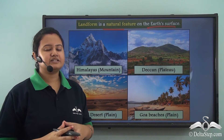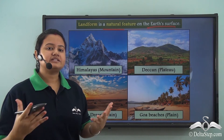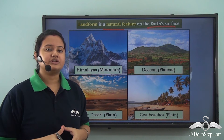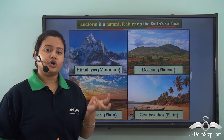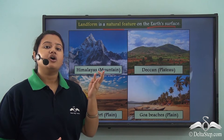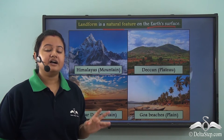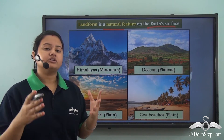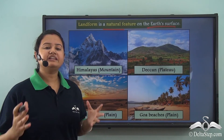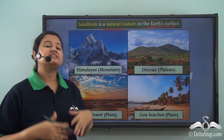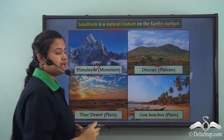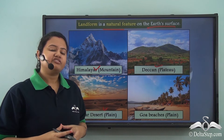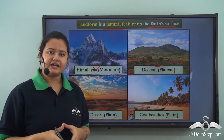There are different types of landforms on the earth's surface. The seven major continents — Asia, Africa, Europe, North America, South America, Australia, and Antarctica — represent the major landforms on the earth's surface. Within these large continents, different landforms are present, like mountains, plateaus, plains, and so on. Thus we find that landforms are of several types.